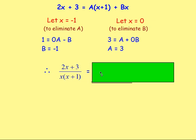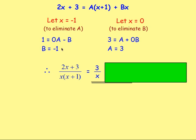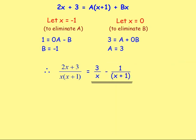Meaning that the fraction written in its partial fractions can be written as 3 over x, and plus negative 1 over (x plus 1). Bringing the negative to the front, that goes to take away 1 over (x plus 1). So that is it written in partial fractions.